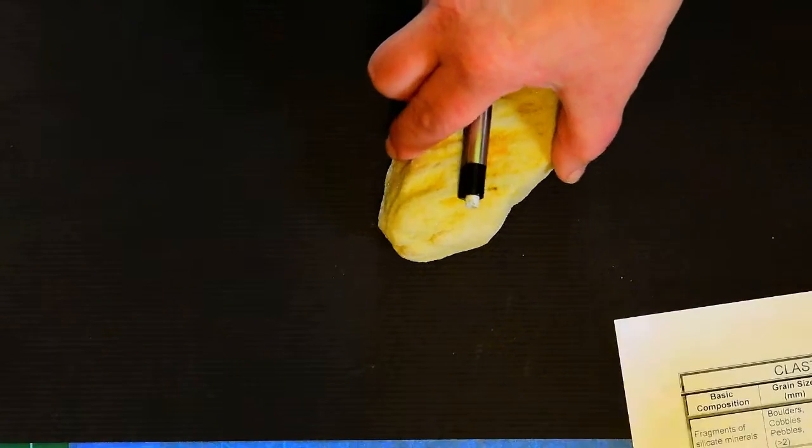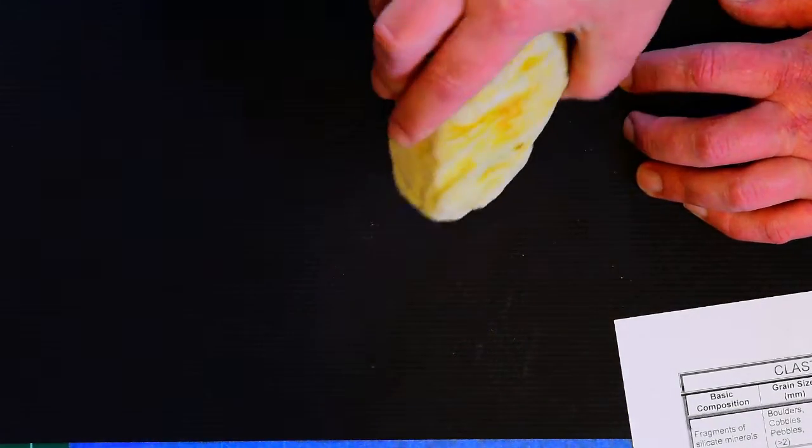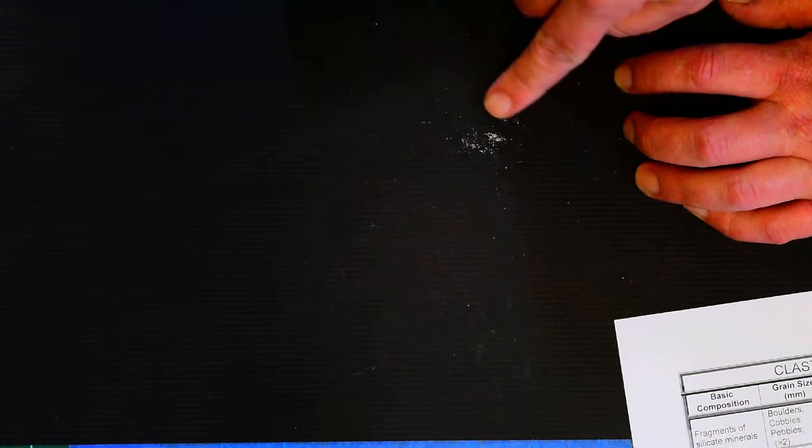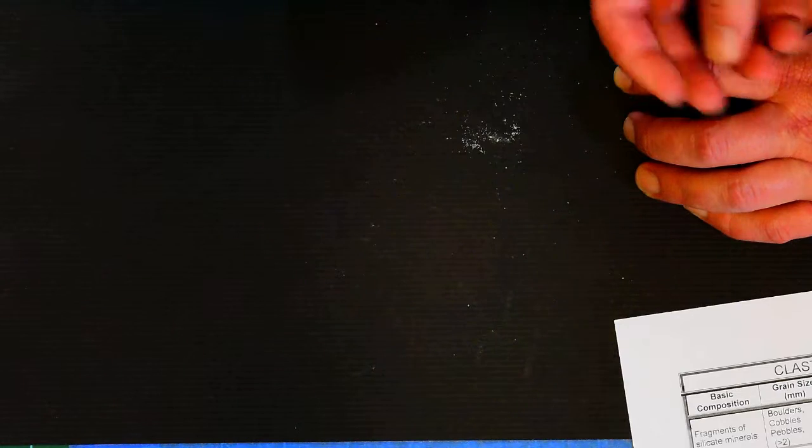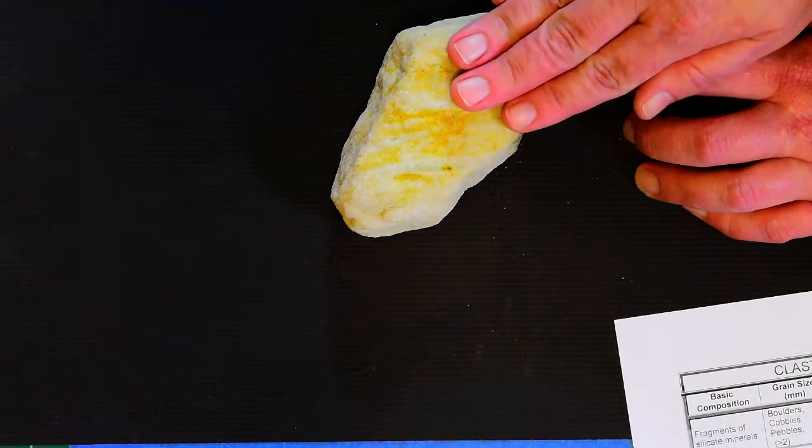This rock here is also a sandstone. It's probably hard to see through the camera but it's made of little sand grains. See, I just knocked a bunch of them off, and if I look really close at them they're colorless. So this one would be a quartz sandstone.